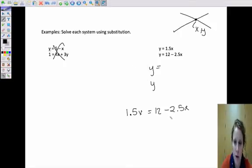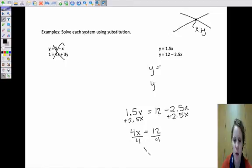So I'm going to add 2.5x's here, add 2.5x's here, and I get 4x's equals 12, divide by 4, divide by 4, and x equals 3. So I know that this point is 3 comma something.